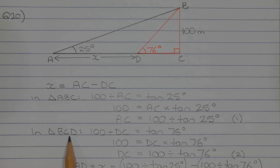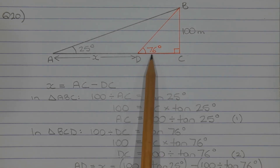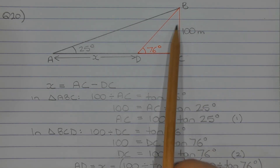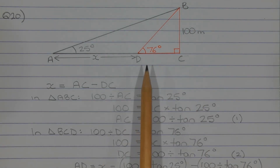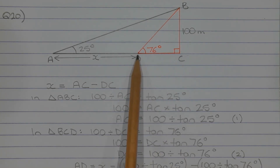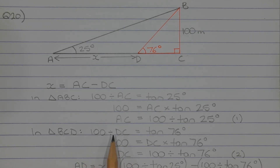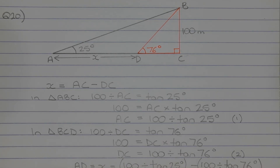In triangle BCD, the angle is 76 degrees. The side opposite is interval BC, which is 100. We want to find the length of the adjacent side, which is interval DC. So, 100 divided by DC — that is opposite over adjacent — is equal to tan 76 degrees. Multiplying both sides by DC gives 100 equals DC times tan 76 degrees. Dividing both sides by tan 76 degrees to make DC the subject, we get DC equals 100 divided by tan 76 degrees. We'll call that equation number two.